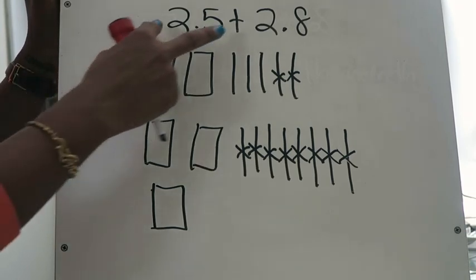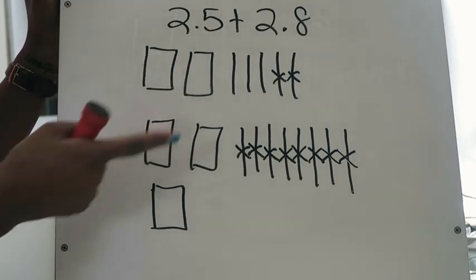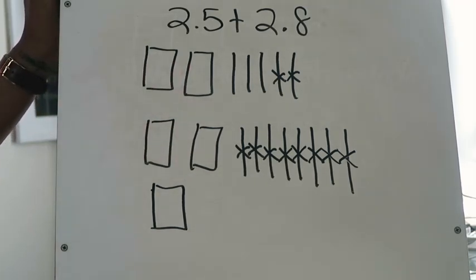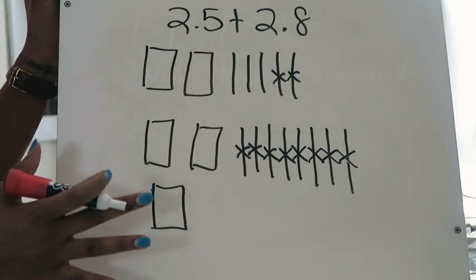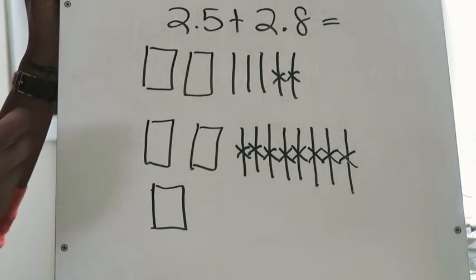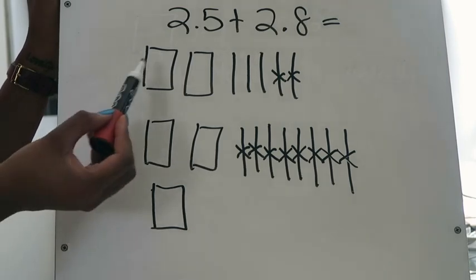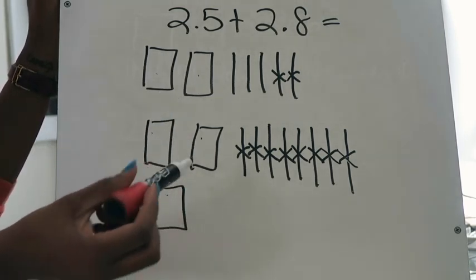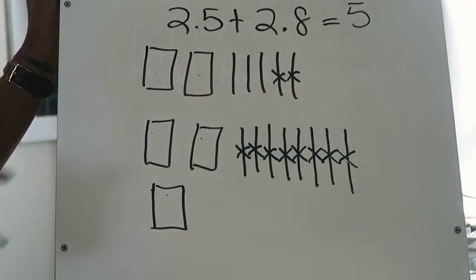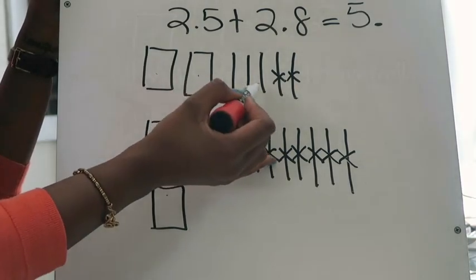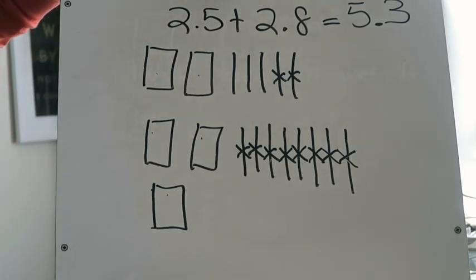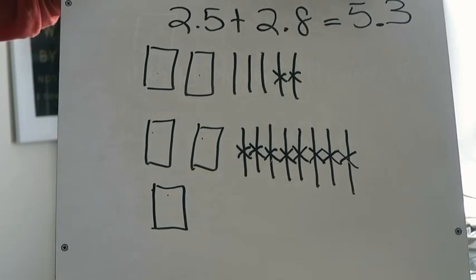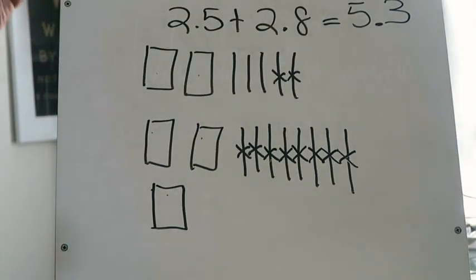Now I'm going to move on to my wholes. I have a total of one, two, three, four, five wholes, so there is nothing for me to regroup there. So I'm actually done adding these two decimals using a quick picture. Now I need to interpret what's left: what is the sum of 2 and 5 tenths plus 2 and 8 tenths? I count five wholes, so in the ones place there's a five. I'm dealing with tenths, so I'll add my decimal. Then I count three tenths, so I write three in the tenths place. This quick picture tells me the sum is five and three tenths.